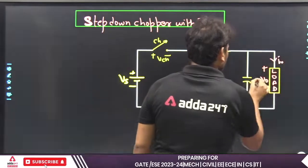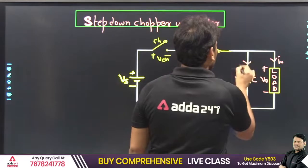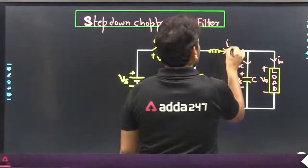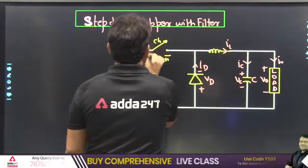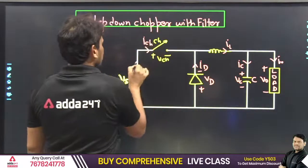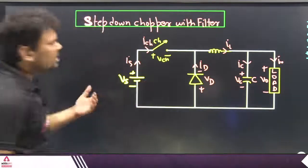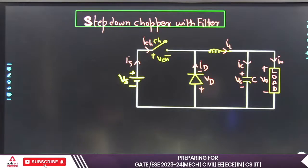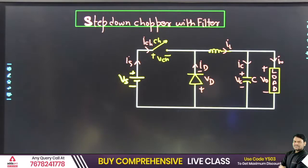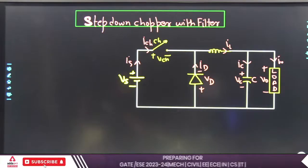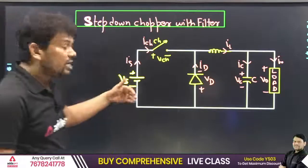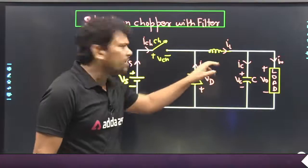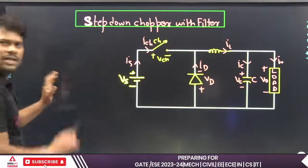This is our last session, so I want to tell you: here you have inductor current ILT, this is diode current ID, here we can mention some voltage VD, and this is chopper current ICH, and somewhere here we can write IS. So this is the chopper equivalent circuit with filter. Now we will discuss the second point. The assumptions are: inductor current is continuous, and all the devices are ideal.